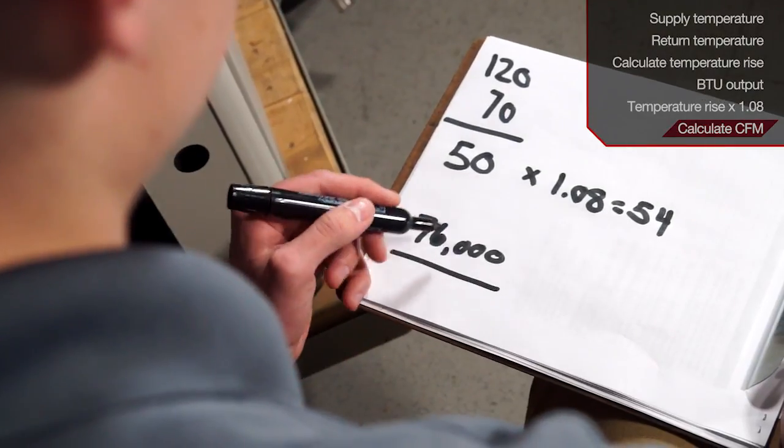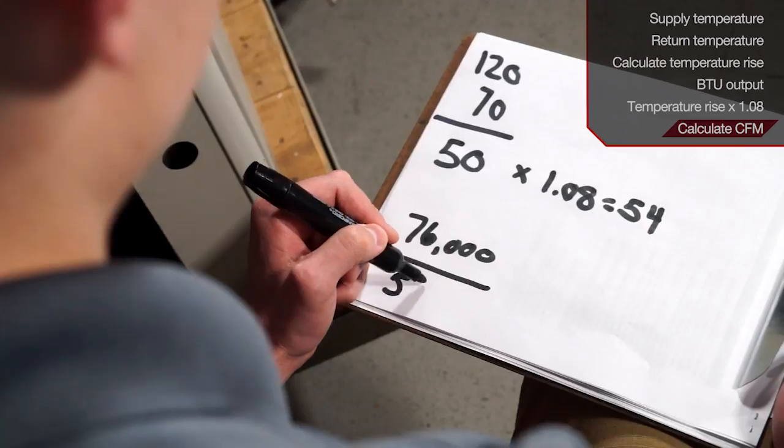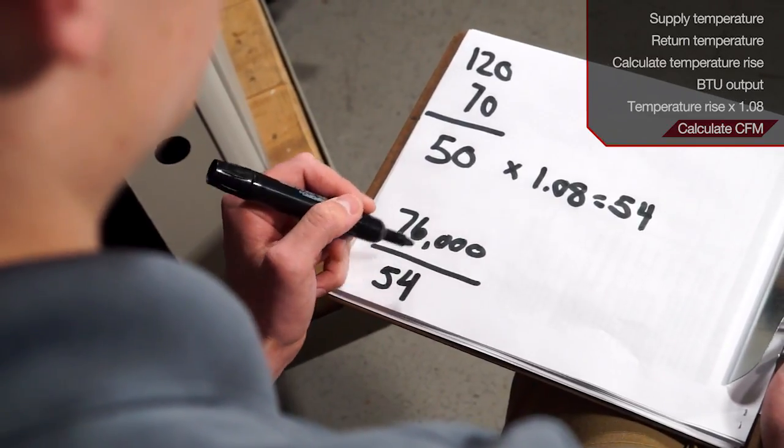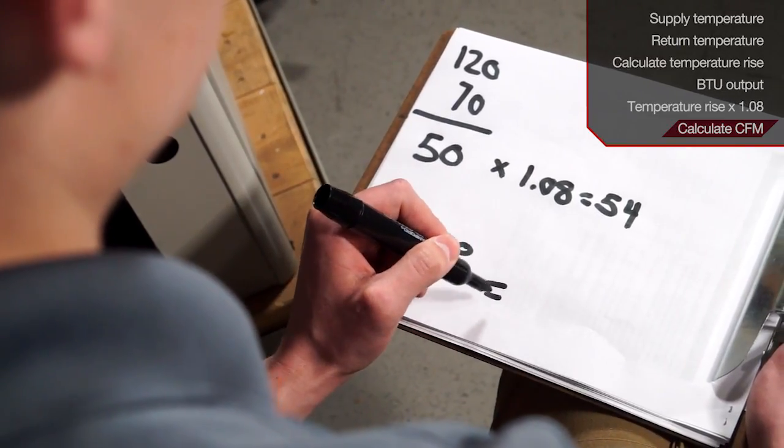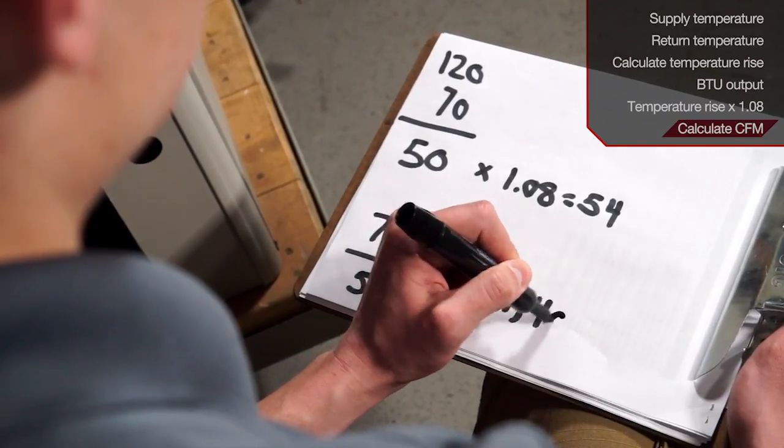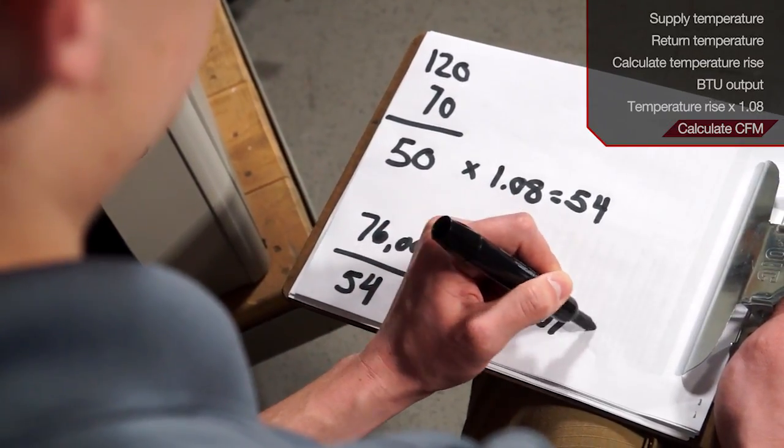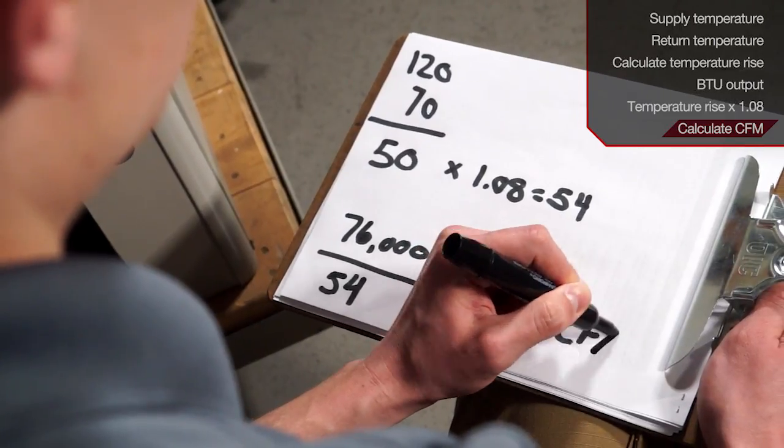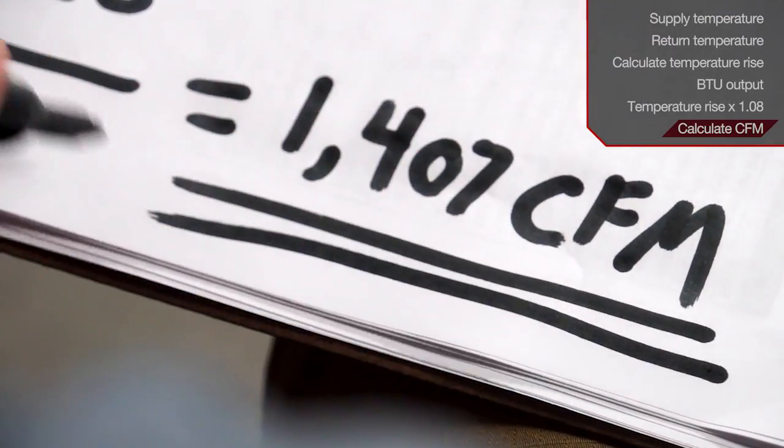The next step is to take your output BTU, which in our case is 76,000, and you're going to divide that by the 54 from calculating our temperature rise. This number will equal the CFM of the output of the furnace, which in our case is 1,407 CFM.